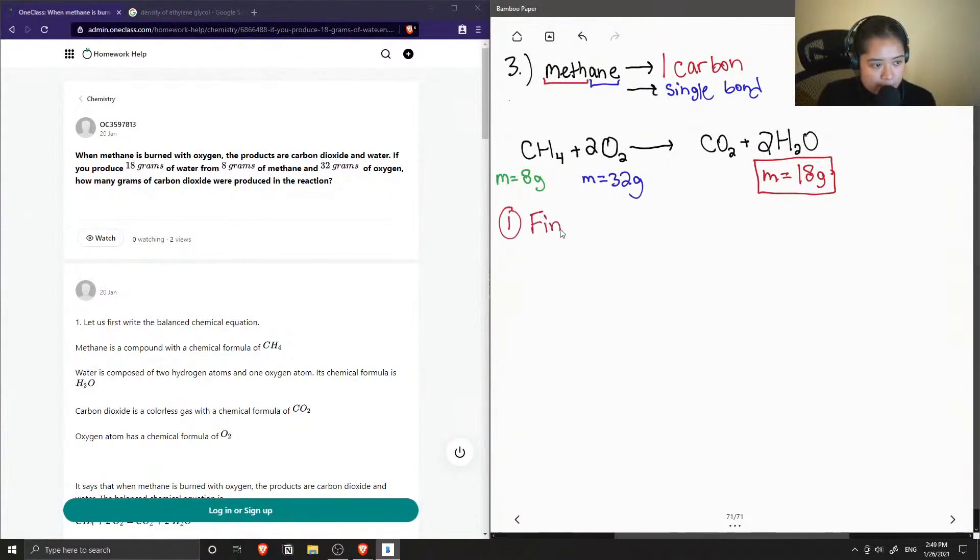So we know the mass is 18 grams and we just need to first find the molar mass of water, which is equal to two times the molar mass of hydrogen plus the molar mass of oxygen. So these values are found on your periodic table. It's 1.01 grams per mole for hydrogen and around 15.99 grams per mole for oxygen. So this gives us a molar mass around 18.02 grams per mole.